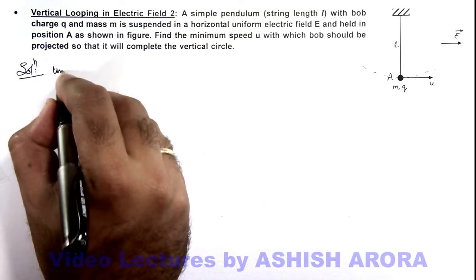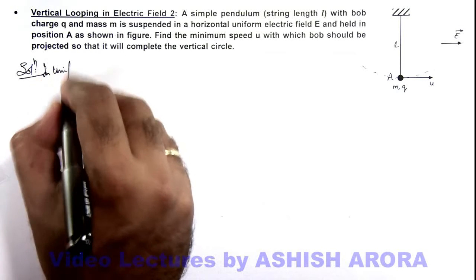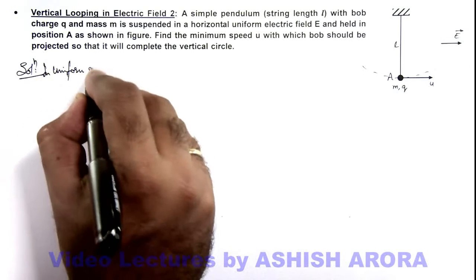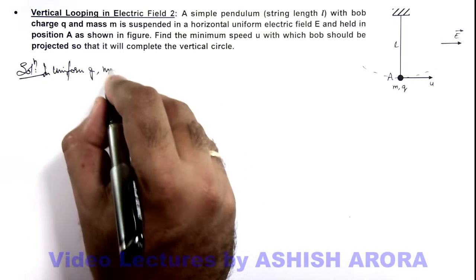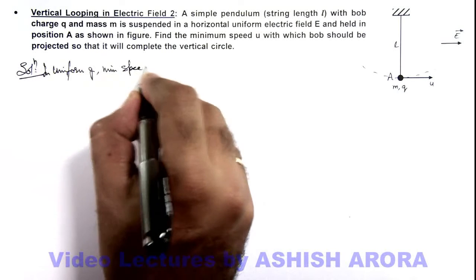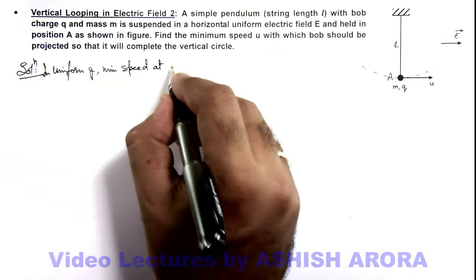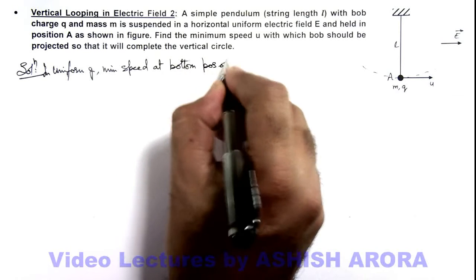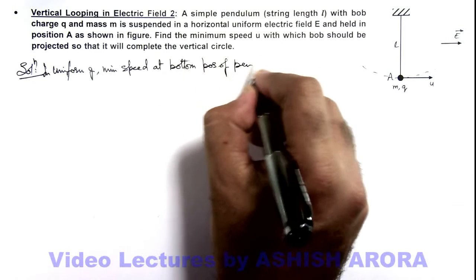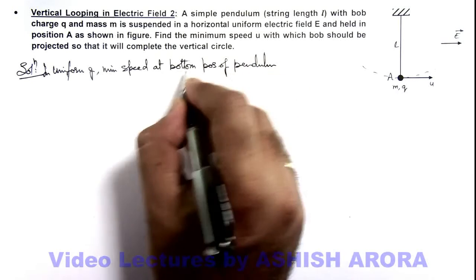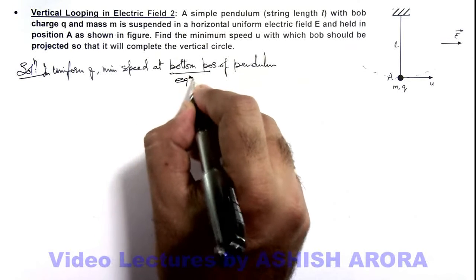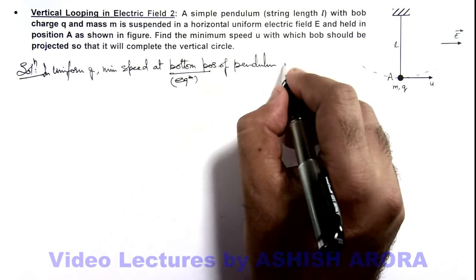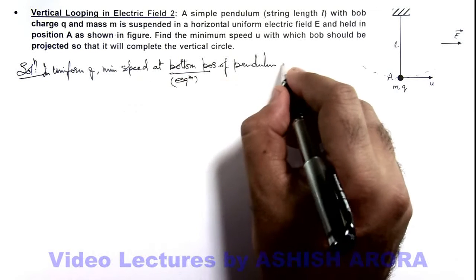We can write in uniform g, minimum speed at bottom position of pendulum. Bottom position is the equilibrium position we are talking about.